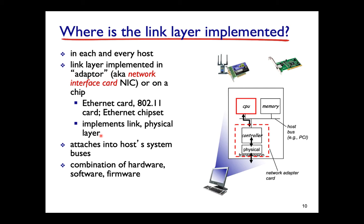Where do you actually install link layer protocol — in the operating system or in the hardware? The data link layer is stored in the network interface card, also called the network adapter. This card implements two layers: the link layer and the physical layer. In the operating system you implement the network layer and transport layer, and in user space you implement the application layer.